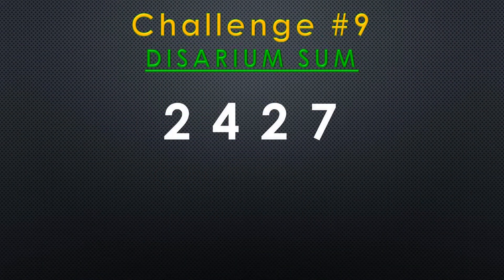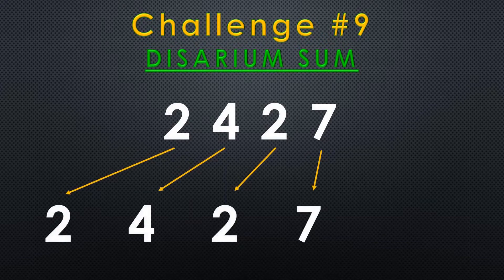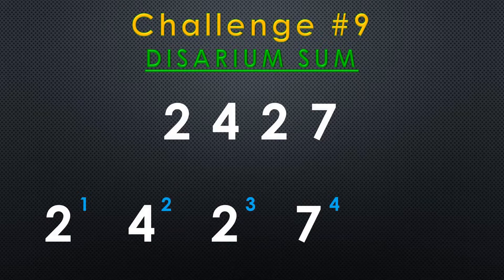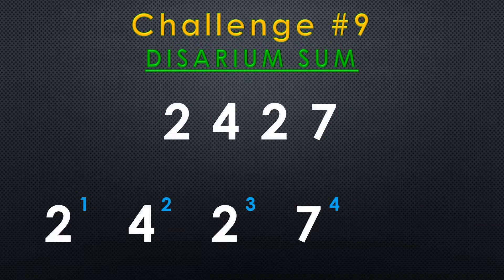Let's take a number, for example, and separate its digits. We then raise each digit to a power equal to its position. So in this case we'd have 2 to the power of 1, 4 to the power of 2, 2 to the power of 3, and 7 to the power of 4.